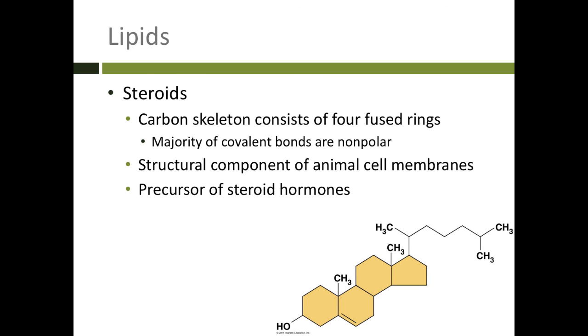The third type of lipids are steroids. These are the precursor for steroid hormones like testosterone and estrogen. This is really quite different. You can see there's four fused rings that have largely non-polar covalent bonds holding them together.